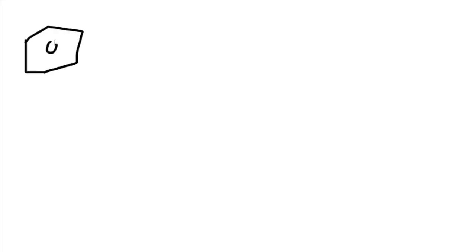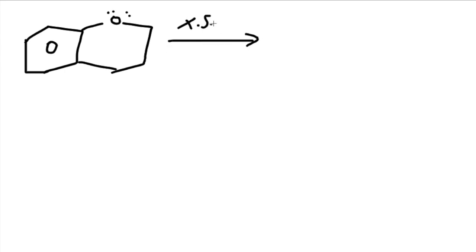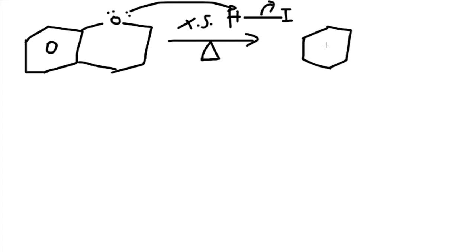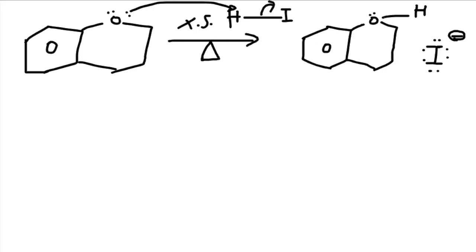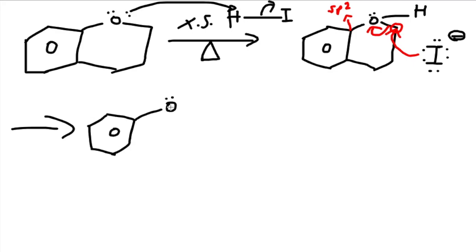Let's do another example. Here we have an aromatic ring attached to an ether. We have excess HI with heat. The oxygen grabs the hydrogen and kicks off the iodide. We have oxygen with one lone pair attached to the structure with a positive charge. Iodide comes in as a nucleophile and attacks the primary carbon — the carbon on the aromatic ring is an SP2 carbon, so it cannot attack there. Electrons go to oxygen, giving us the aromatic ring attached to an OH plus iodine on the structure. Since that carbon is SP2, this is our final product.